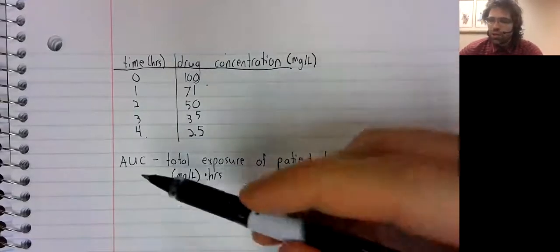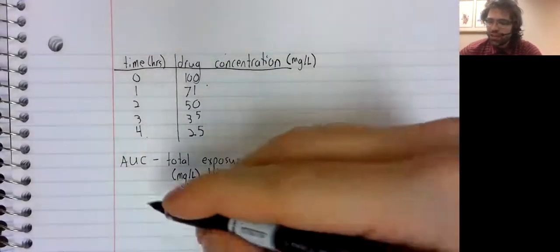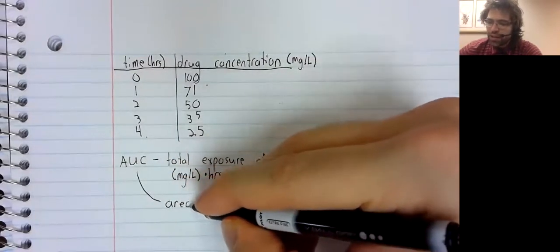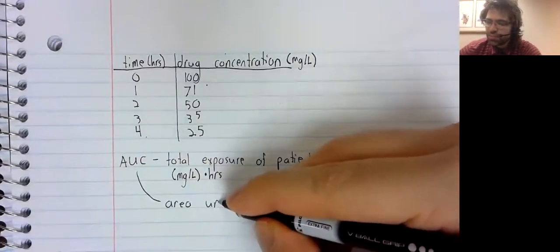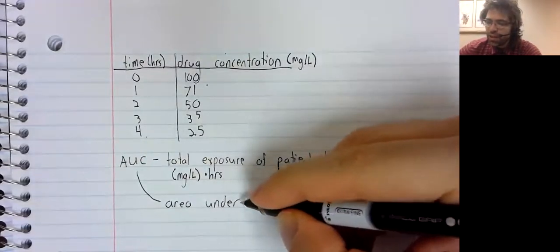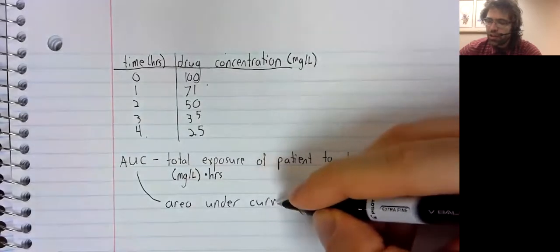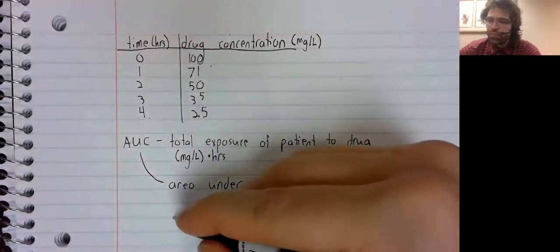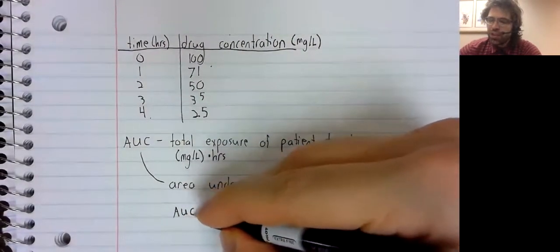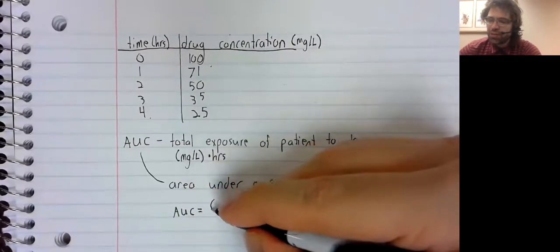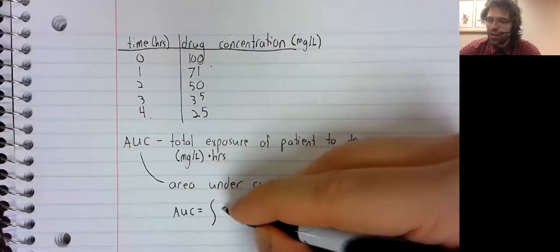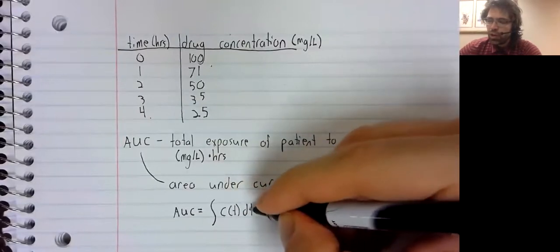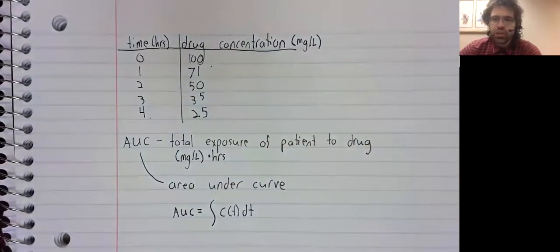What does AUC stand for? So glad you asked. It stands for Area Under Curve. And the AUC, as you might guess from the name, is the integral of the drug concentration function.